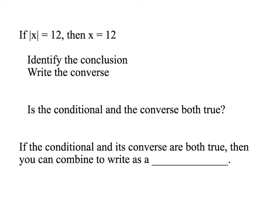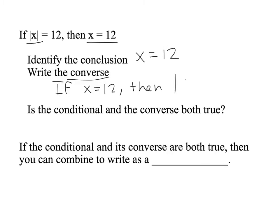Here's another conditional statement: if the absolute value of x equals 12, then x equals 12. Identify the conclusion — the conclusion is after the 'then,' so the conclusion is x equals 12. The converse switches the hypothesis and conclusion: if x equals 12, then the absolute value of x equals 12.